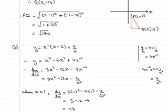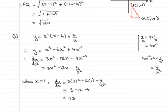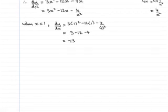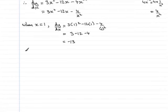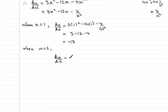Now if I do exactly the same for Q, at Q we know that the x coordinate is two. So when x is two, I find that dy/dx is going to be three times two squared minus twelve times two minus four over two squared.